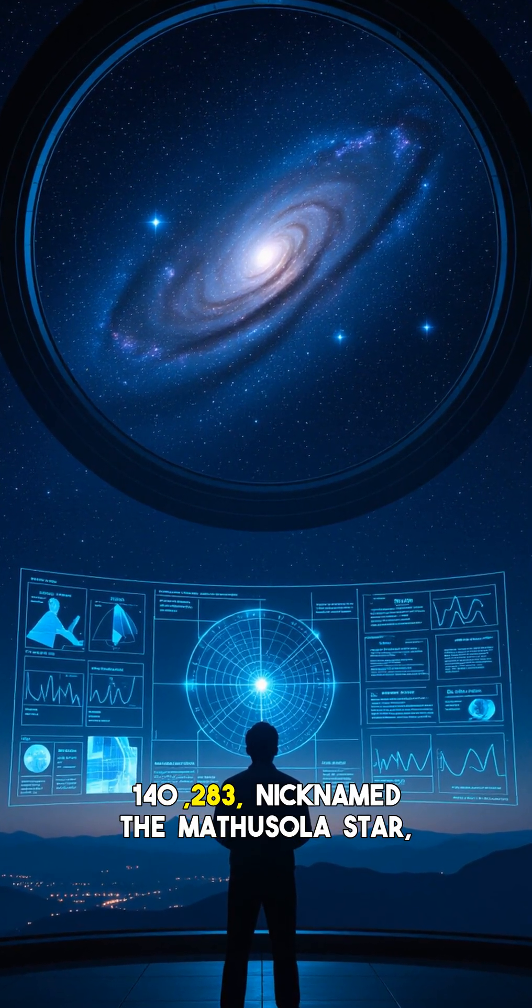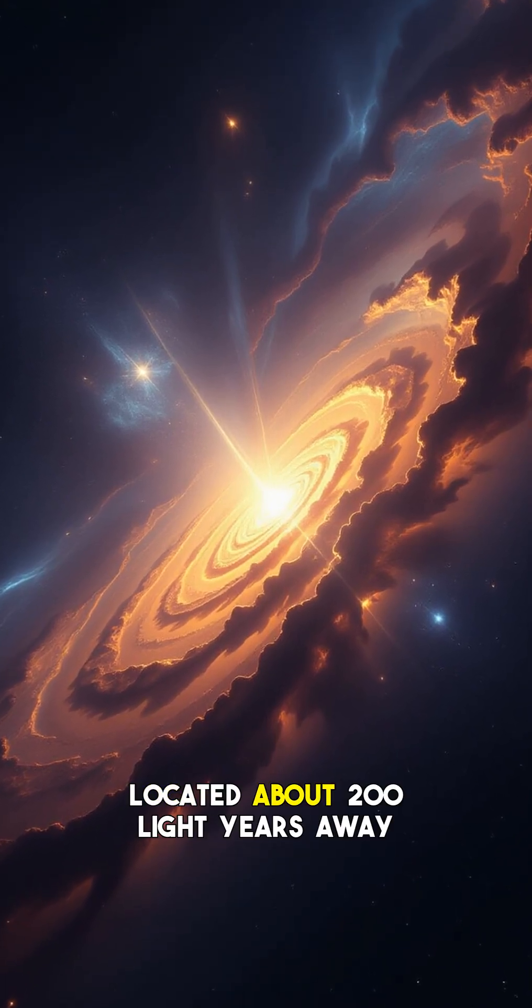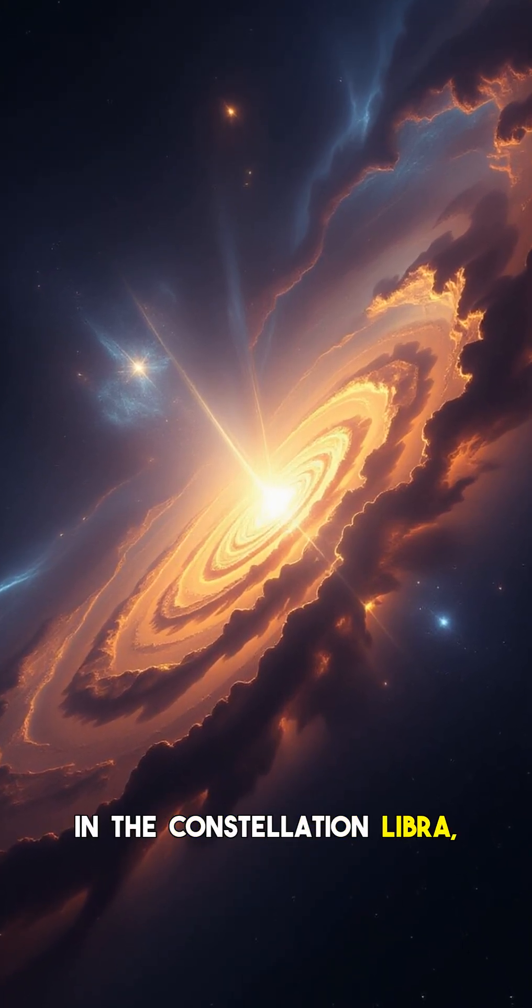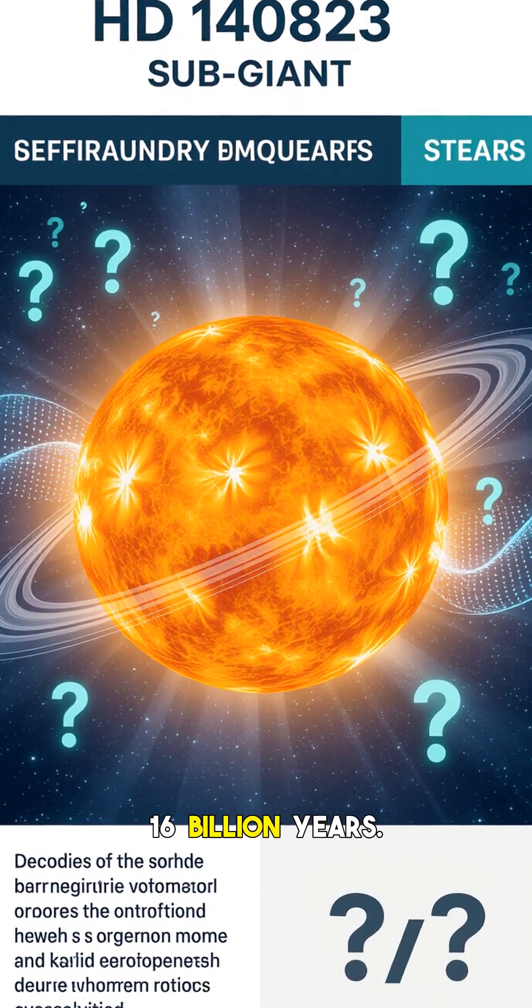HD 140,283, nicknamed the Methuselah Star, has puzzled scientists. Located about 200 light-years away in the constellation Libra, initial age estimates for this ancient subgiant star reached as high as 16 billion years.